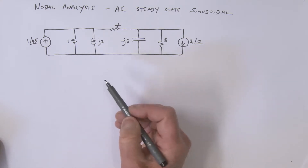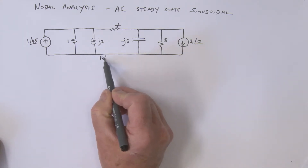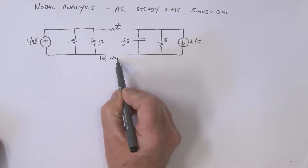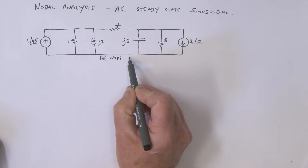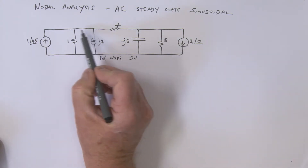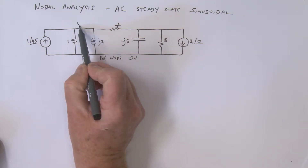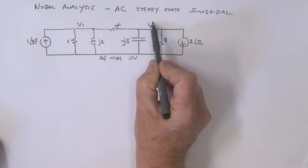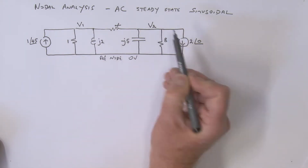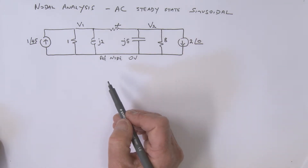We can define a reference node here — this is my reference node, at zero volts. We'll call this node here the v1 node, and we'll call this one over here the v2 node.